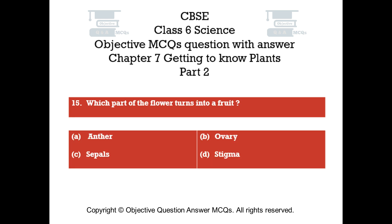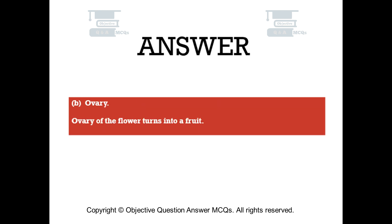Question number fifteen. Which part of the flower turns into a fruit? Option A anther. Option B ovary. Option C sepals. Option D stigma. The right answer is option B — ovary. The ovary of the flower turns into a fruit.